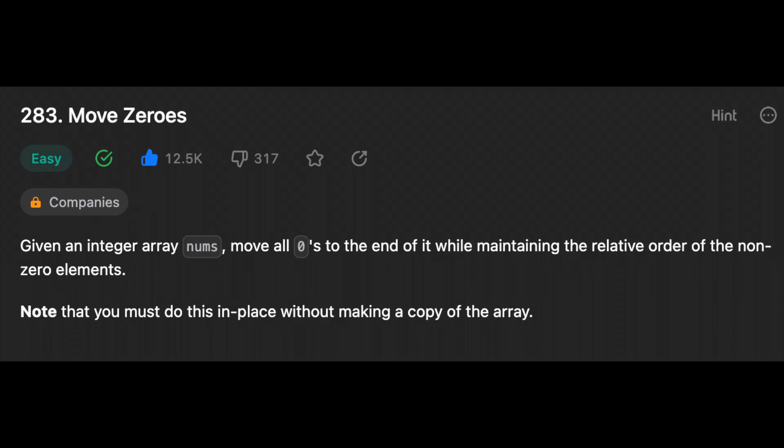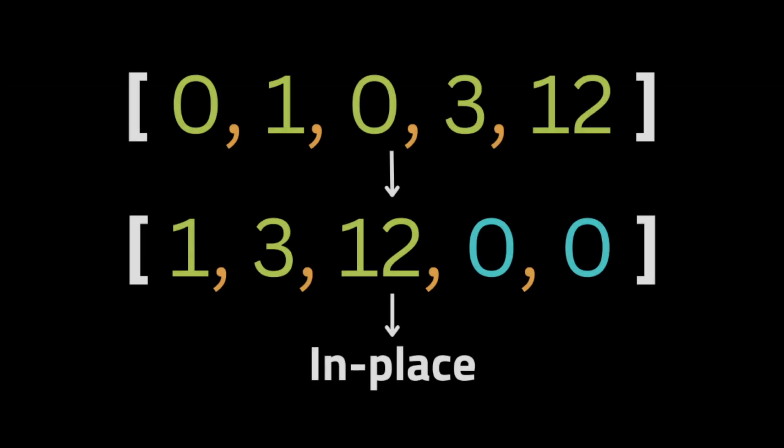Hello guys, I hope you are all doing well. In this video I will explain and show you how to solve the problem with zeros. So the problem is: given an array of integers, move all the zeros to the end while maintaining the relative order of the non-zero elements. We must do this in place without making a copy of the array.